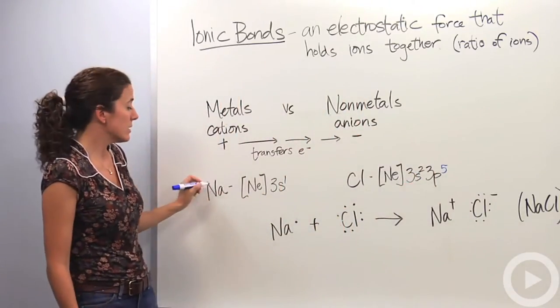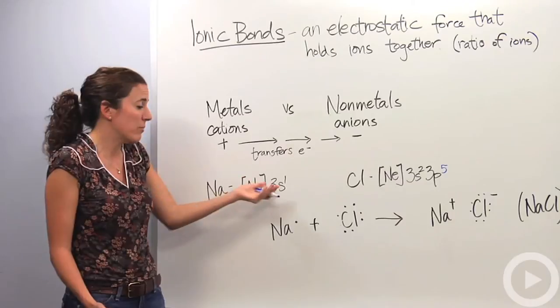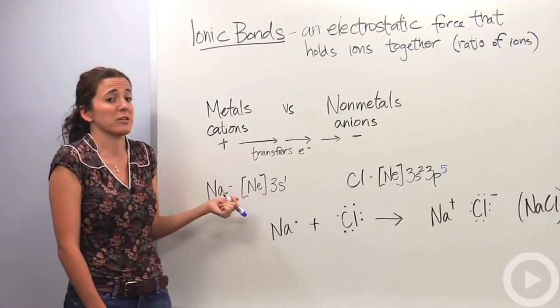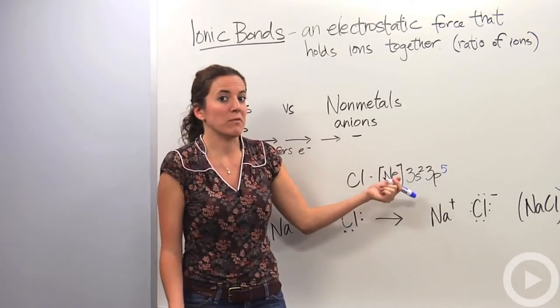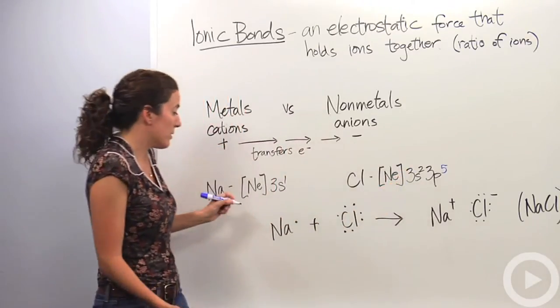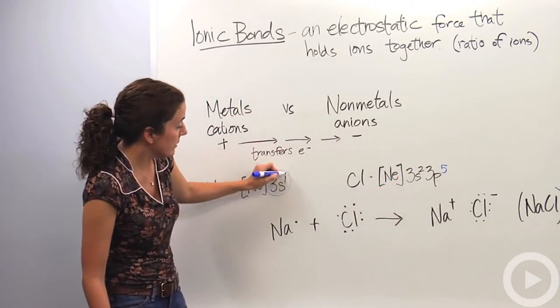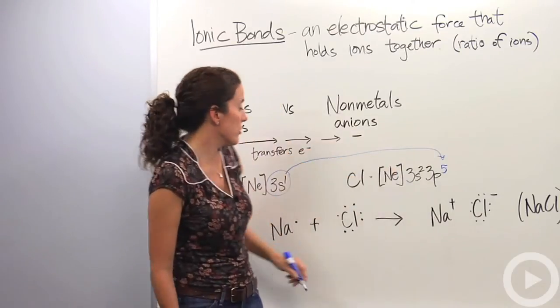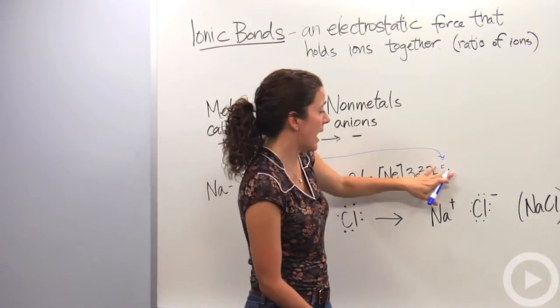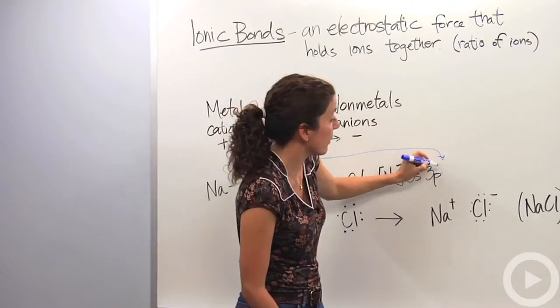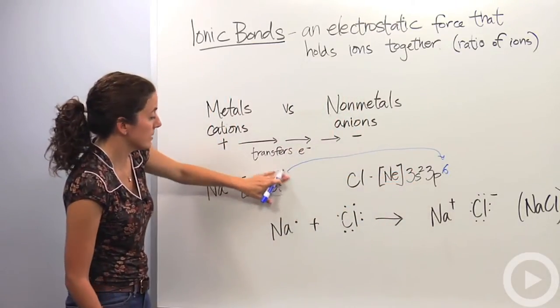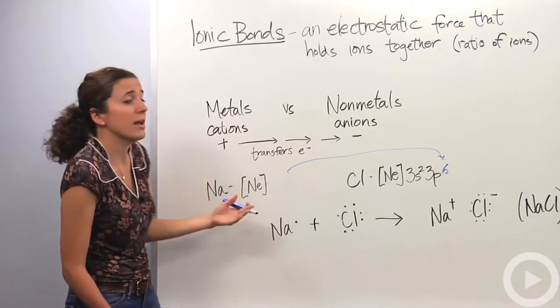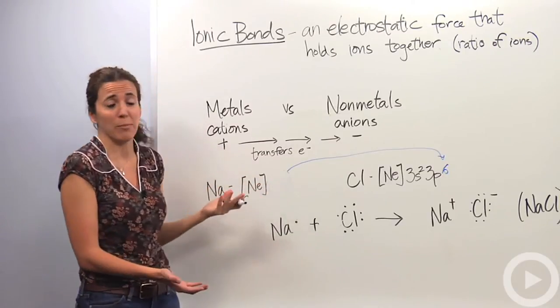So what happens is, sodium is going to say, okay well I'd rather give up this electron so I can have the stable configuration of Neon. And chlorine is like, well I would like to get one so I can have the stable configuration of Argon. So what's going to happen? Well sodium is going to be super nice and give up its electron to chlorine. Chlorine is then going to have a configuration of 3p6, which is great because it's a configuration of Argon, very stable. And sodium is going to get rid of this and it's going to have the configuration of Neon, again very stable, so everybody's really happy.